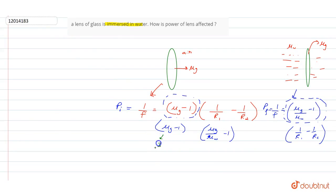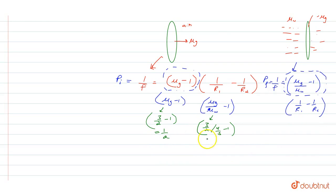So mu glass, that is 3 by 2 minus 1. And mu glass is 3 by 2 divided by mu water, that's 4 by 3, minus 1. So we will solve this. 3 by 2 minus 1, and 3 by 2 into 3 by 4 minus 1, that is 9 by 8 minus 1.